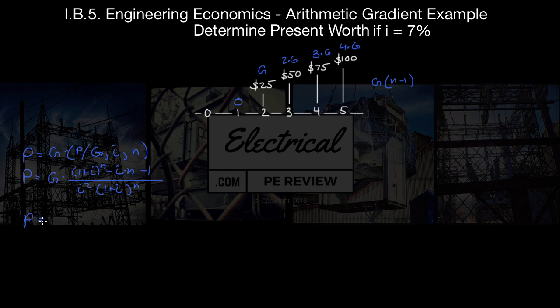So we're just going to plug in our values. We've got p equals g is $25 times parenthesis 1 plus 0.07, that's our interest, times an exponent period of 5 minus our interest times n, 0.07 times 5 minus 1 all over i squared, 0.07 squared. Times 1 plus i, 0.07 times an exponent of 5.